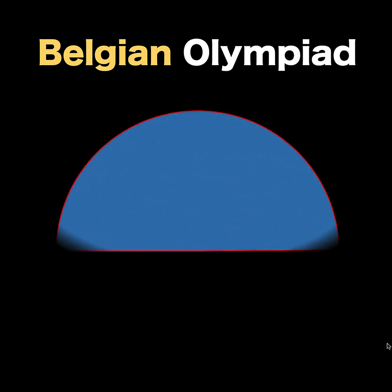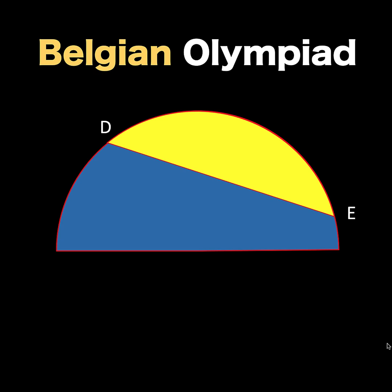Hi guys, here is our math problem for today. Let's say we have this blue semicircle and let's connect points D and E to form this yellow circular segment of the blue semicircle. Then let's fold this yellow circular segment across line DE this way.